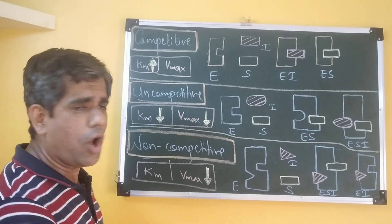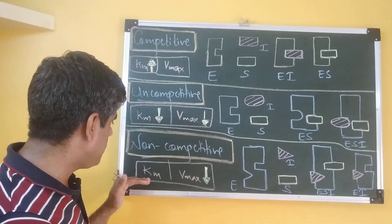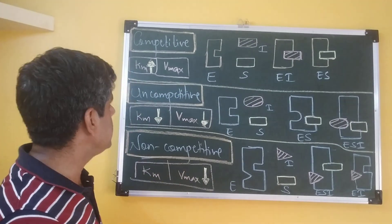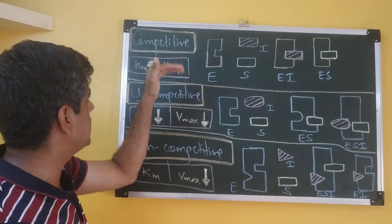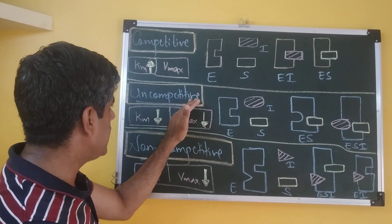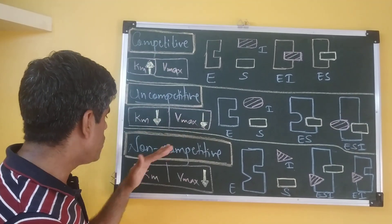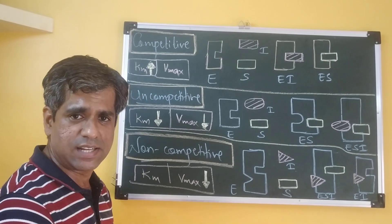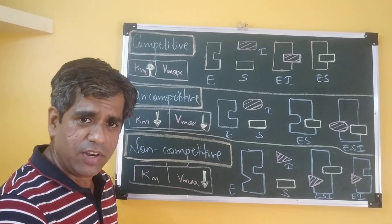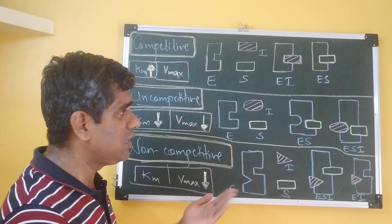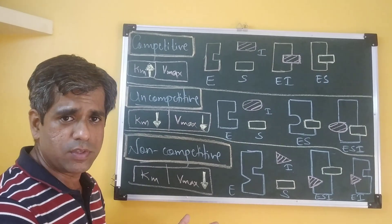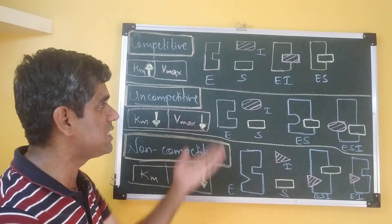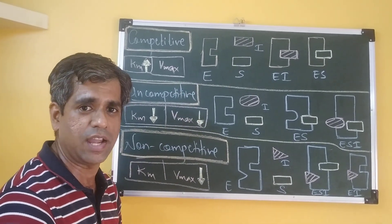So a typical non-competitive inhibitor: Km value constant, Vmax value decreases. To summarize: competitive — Km increases, Vmax constant; uncompetitive — both decrease; non-competitive — Km constant and Vmax decreases. We have separate videos with the derivation of all three inhibition equations, where the initial velocity equations for these inhibitors are derived. Please do watch them. Thank you.